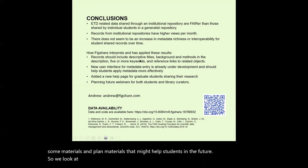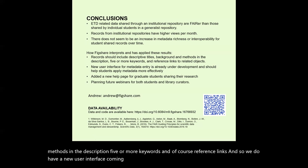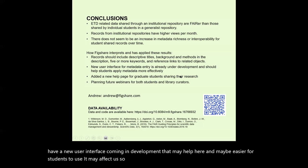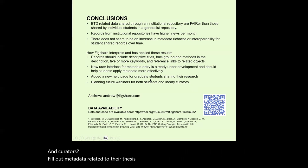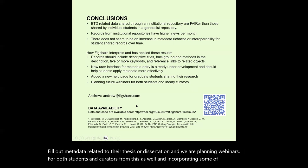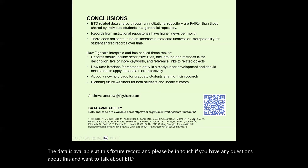We look at FAIR metadata as having descriptive titles, a background and methods in the description, five or more keywords, and of course reference links. We have a new user interface in development that may help here and may be easier for students to use — we'll have to account for that if we redo this analysis. We have launched a help page to assist students and curators in filling out metadata related to their thesis or dissertation, and we are planning webinars for both students and curators incorporating some of this information. The data is available at the linked Figshare record. Please be in touch if you have any questions about ETD data. Thank you for viewing this presentation.